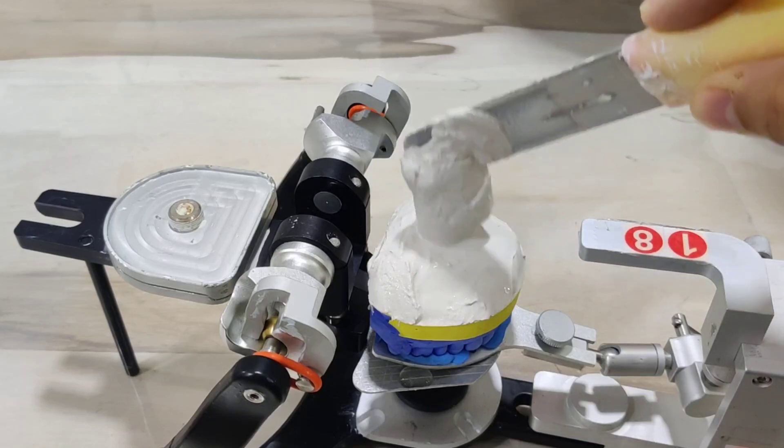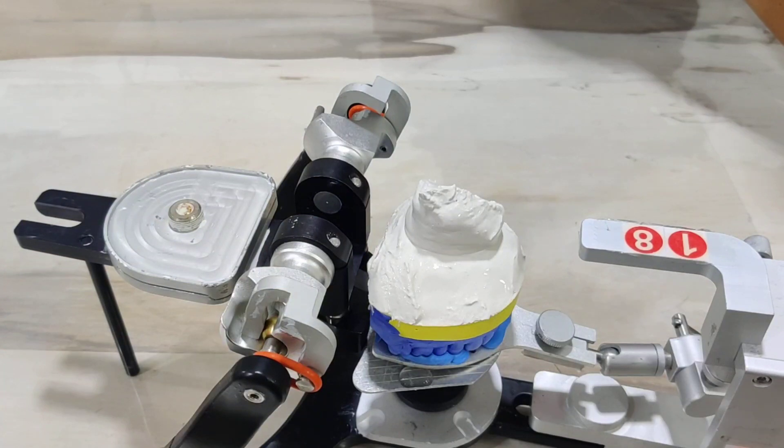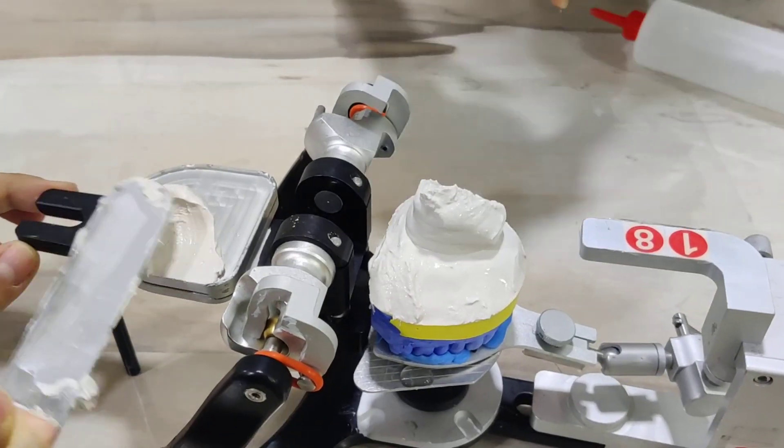We take more plaster but this time we will adapt it onto the mounting plate, adapting this around the entire periphery of the plate.